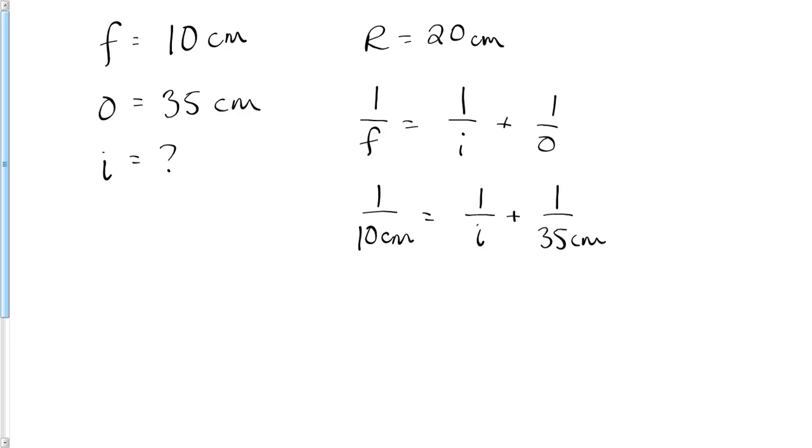Subtract one over 10 minus one over 35. If you're doing it in your head, you've got to find a common denominator. Don't say it's one over 25 or something dumb like that. Just type it in your calculator or find a common denominator. Common denominator is 70. Seven over 70 minus two over 70 equals one over i. Five over 70 equals one over i, so i is equal to 70 over 5, which is 14.